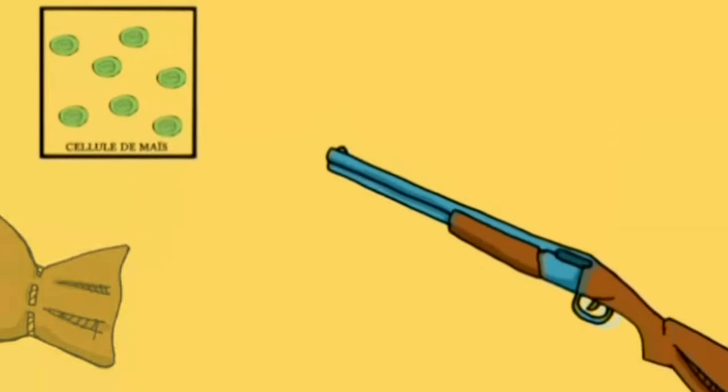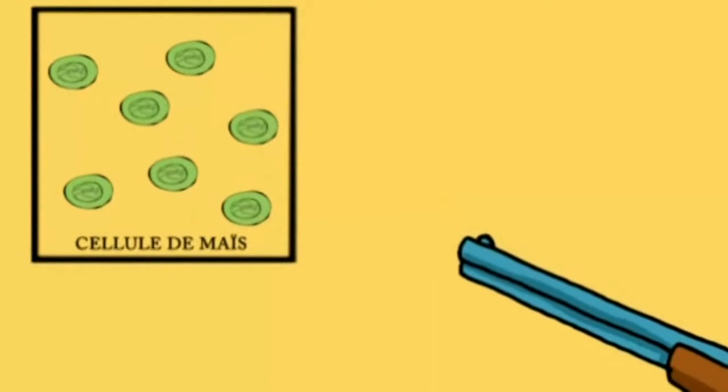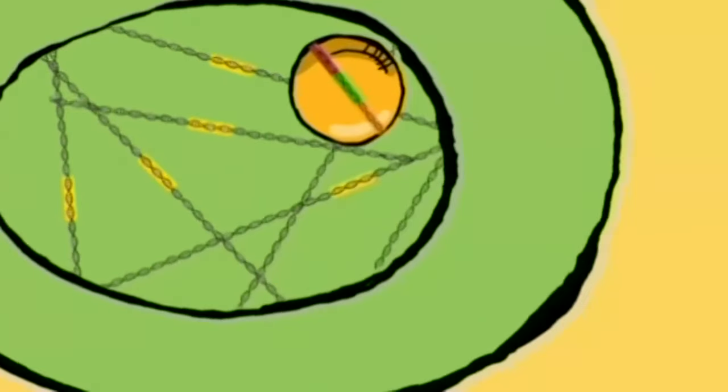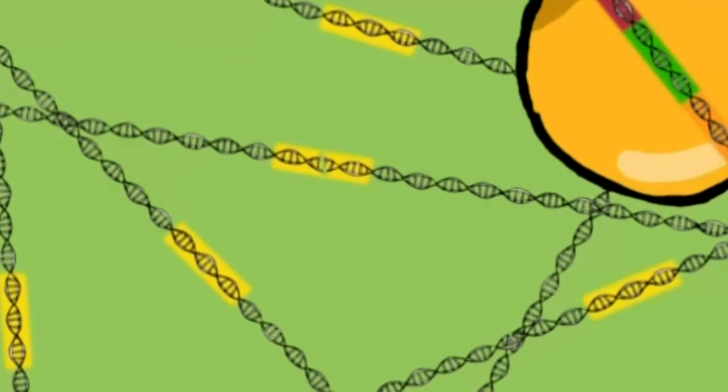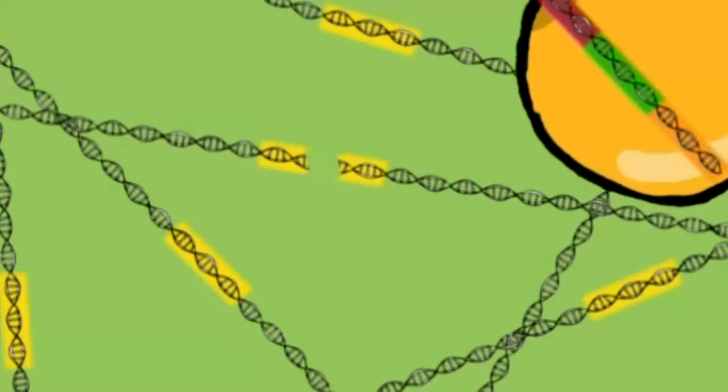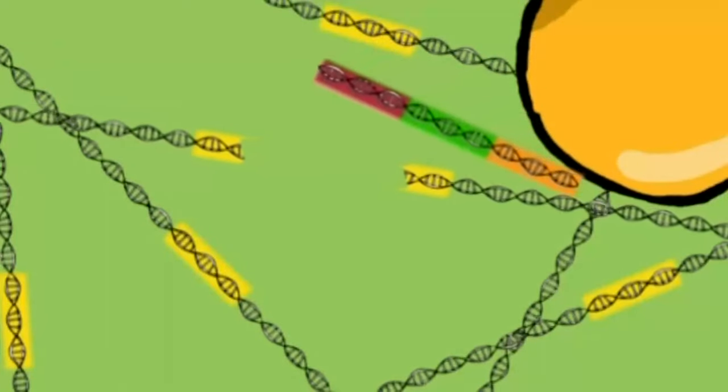On charge le fusil et on tire sur les cellules de maïs. Si on a de la chance, quelques billes vont rentrer dans les cellules de maïs bien dans le cœur. Et de là, le transgène peut aller s'incruster dans l'ADN du maïs.